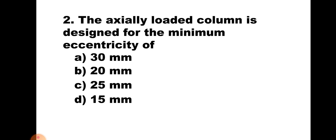Question number 2. The axially loaded column is designed for the minimum eccentricity of: A) 30 mm, B) 20 mm, C) 25 mm, or D) 15 mm. Even when designing a column as axially loaded, due to some reasons there may be eccentricity which should be accounted for. Such eccentricity is calculated as unsupported length/500 plus H/30, or 20 mm, whichever is more. Hence the eccentricity for which a column is designed is 20 mm. The correct answer is B, 20 mm.